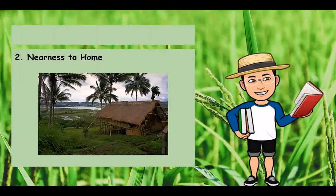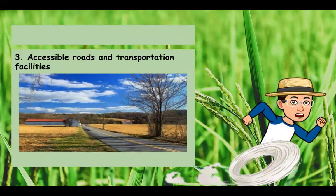Next is nearness to home — a site near the home enables the farmer to work at any time and manage the farm efficiently. Number three is accessible roads and transportation facilities. Good roads from farm to market or shipping ports are important. Rough roads limit the volume of goods, increase wear and tear, and consume too much time. Transporting must be done with care to prevent bruising vegetables and fruits.